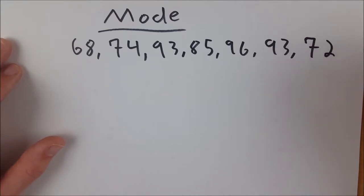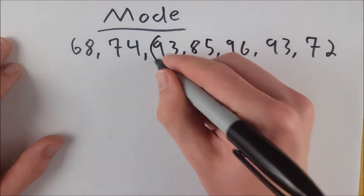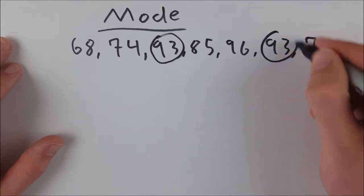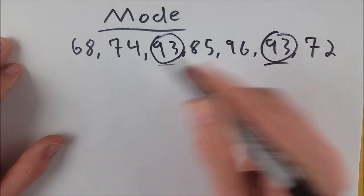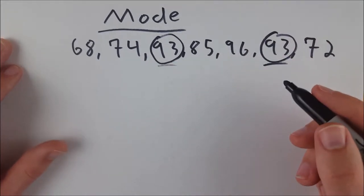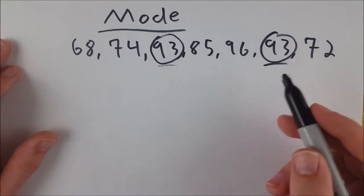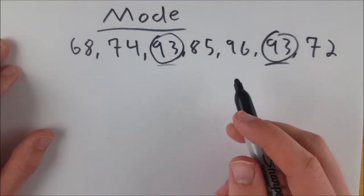So in this case, the mode of our set of data is 93 because it appears once, twice, and no other number appears more than once. So 93 is our mode because it's the most common data point in the set of data.